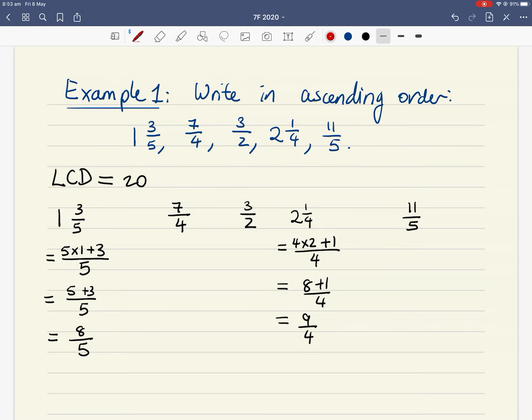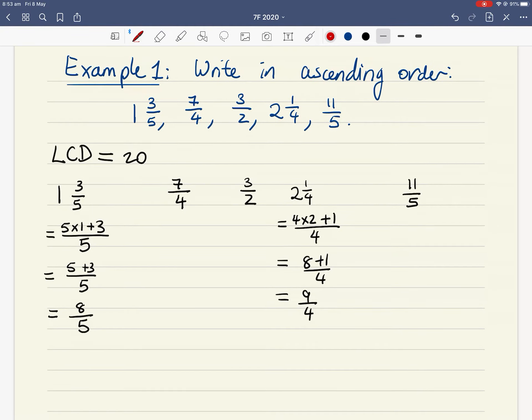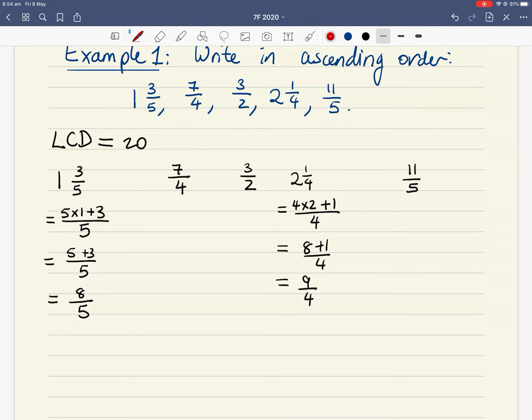What we need to do now is to make sure all our fractions have the same denominator. So I'm going to convert each of these fractions individually, so that they have the same denominator. Let's look at the first fraction, 1 and 3 fifths, which is essentially the same as 8 over 5. So to make the denominator 20, I need to times 4 top and bottom. Then I will get 8 times 4 is 32, 5 times 4 is 20.